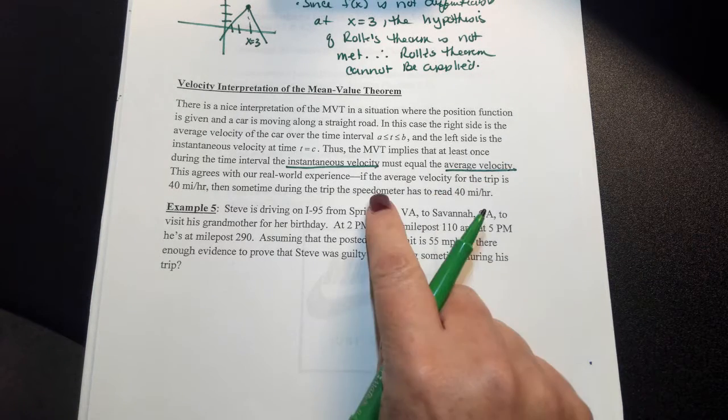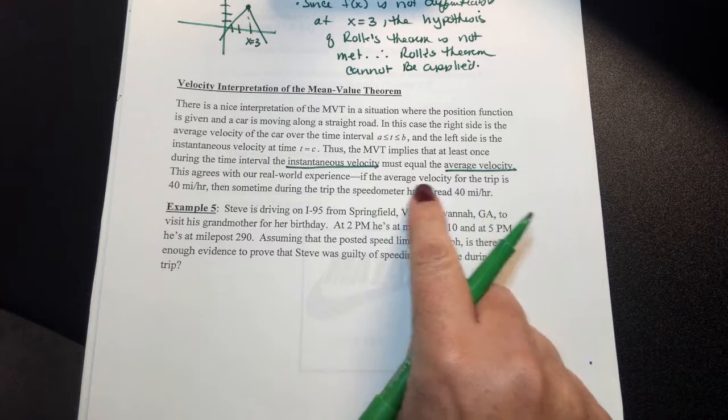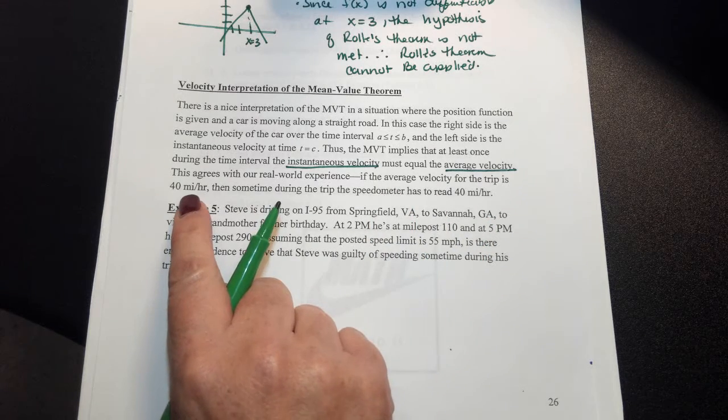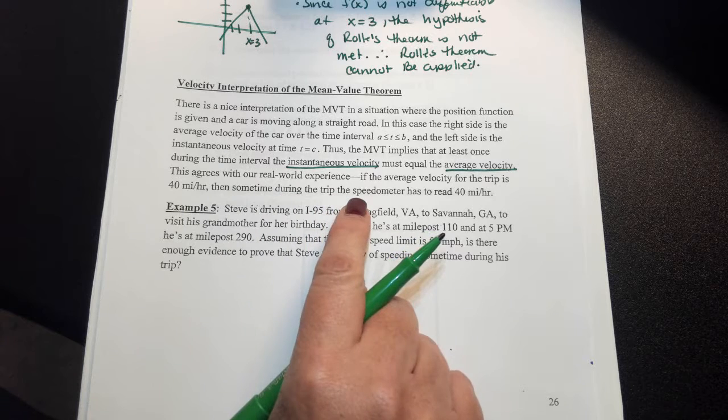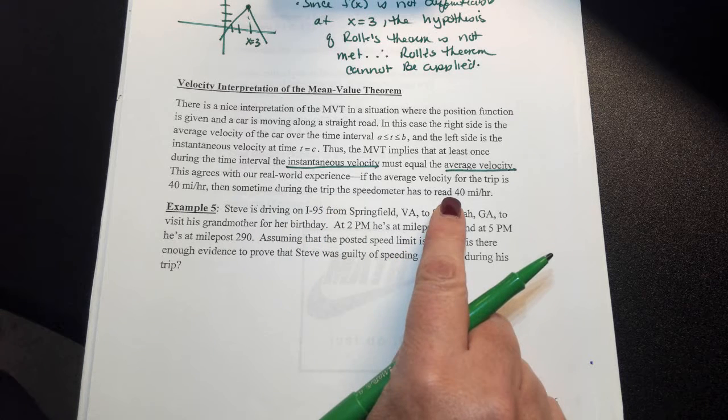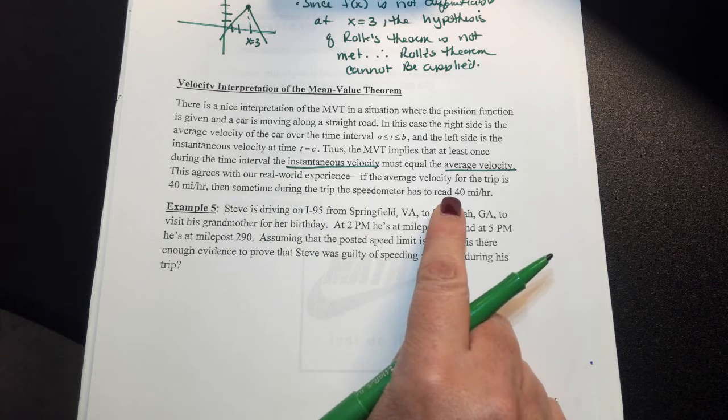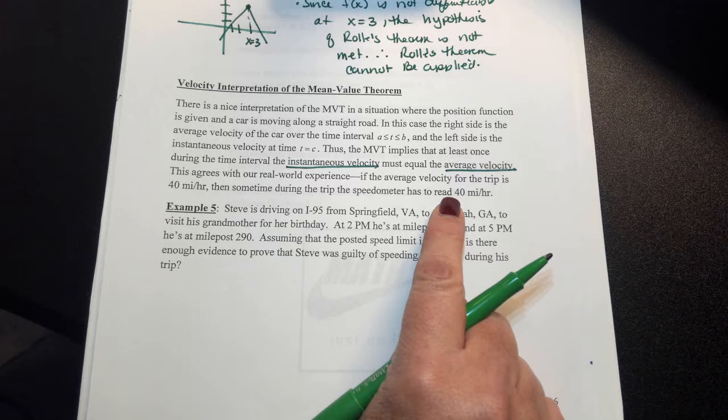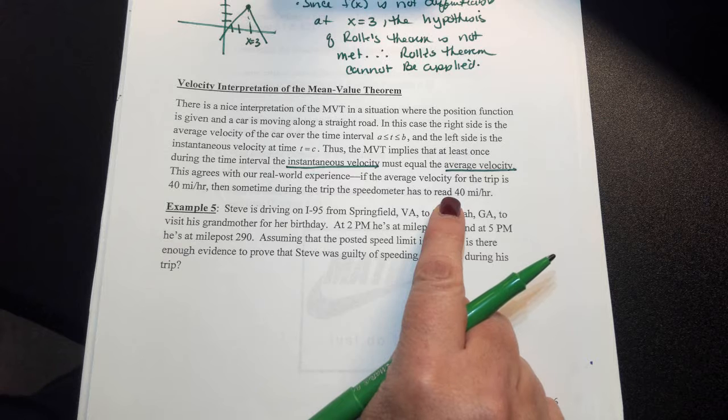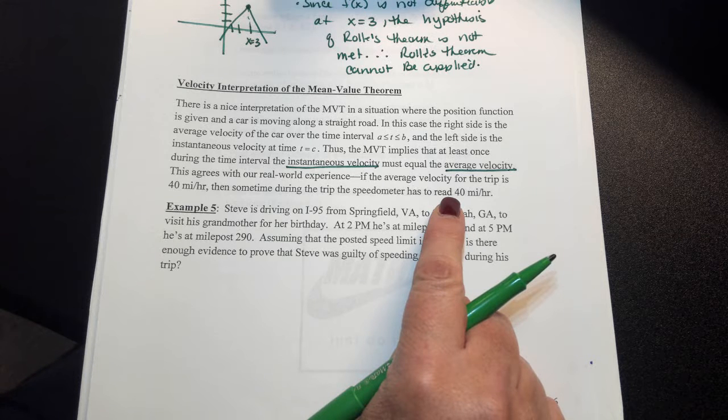What that means is this. Suppose if your average velocity for a trip is 40 miles per hour, then there has to be at some time during the trip at least once where your speedometer was read to be 40 miles per hour. You may be going a little bit faster or a little bit slower, but to have an average velocity of 40 miles per hour, at least one time during your trip, your speedometer had to have read 40 miles per hour.